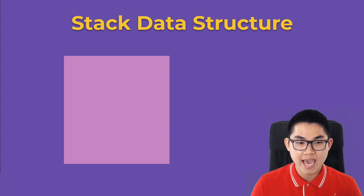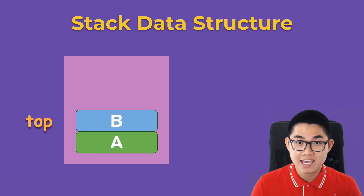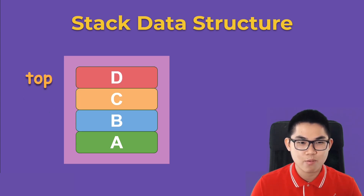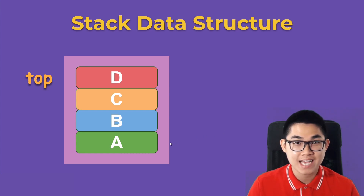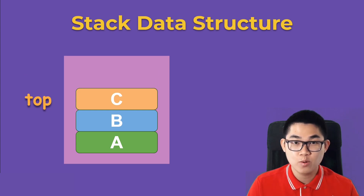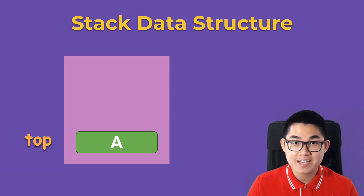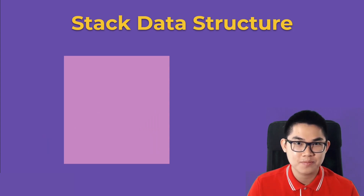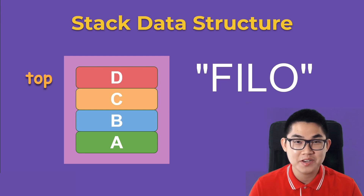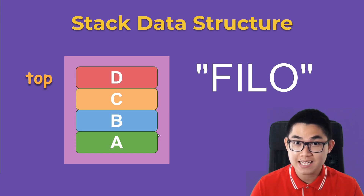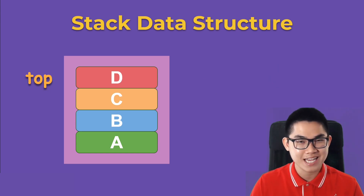Imagine that we have a box. We put book A into the box, then we put book B on top of A, then C on top of B, and D on top of C. Now we have a stack of books. If we want to get A outside of the box, we need to remove the other books — remove D, remove C, remove B — and now we have A. Stacks have a property called first in, last out: A is the first one to go in and the last one to come out.